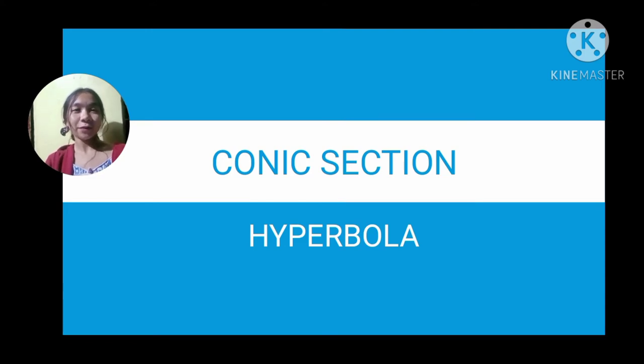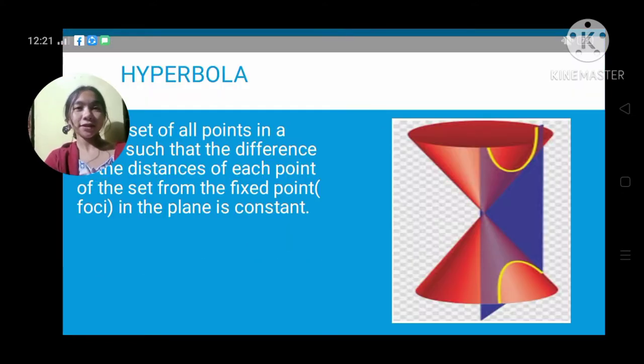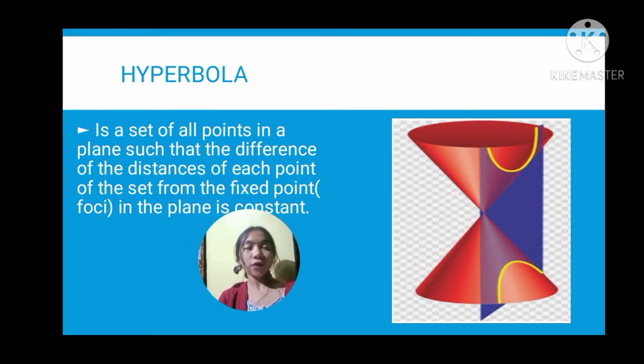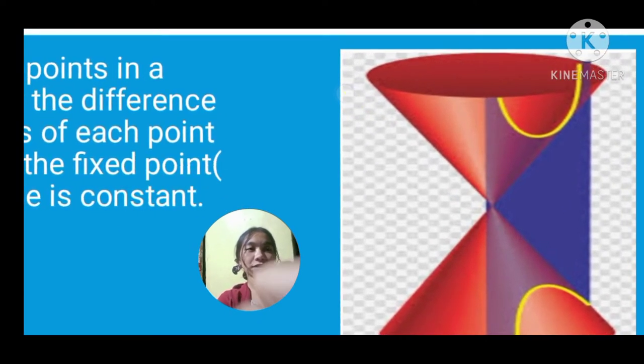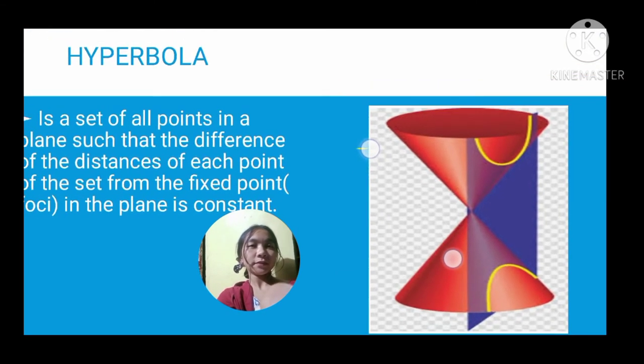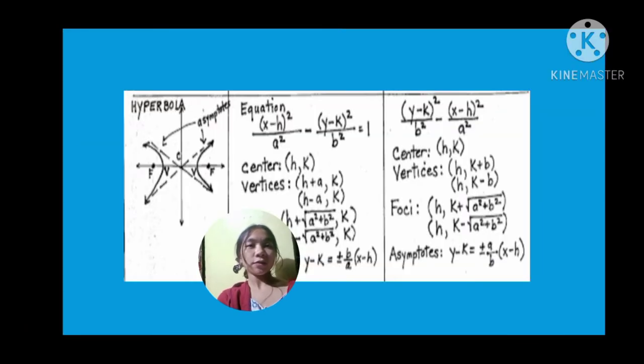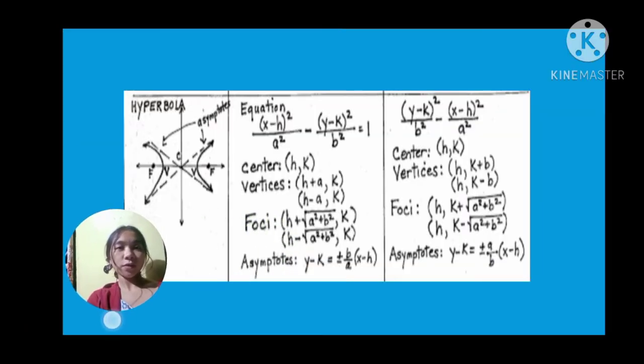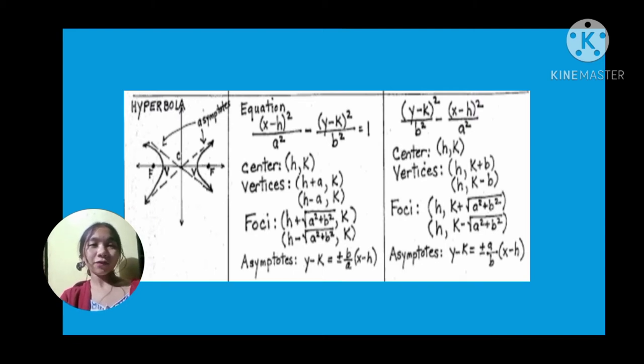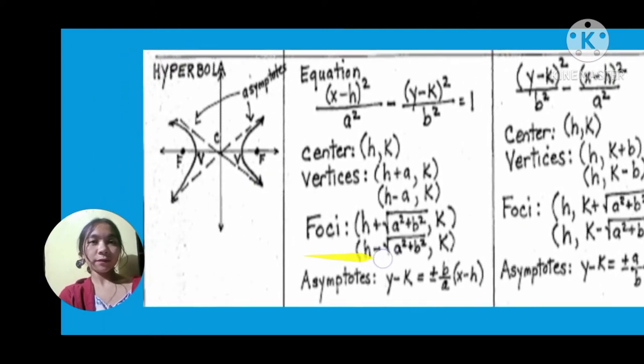The hyperbola is a set of all points in a plane such that the difference of the distances of each point of the set from the fixed points, or the foci, in the plane is constant. On the right here we have what the hyperbola looks like. We have here the equation that will be used for solving the hyperbola.